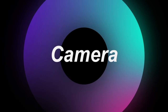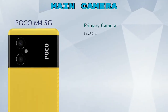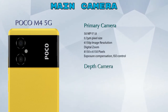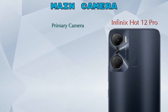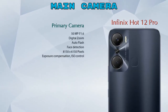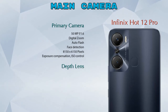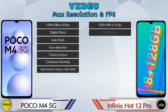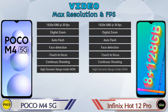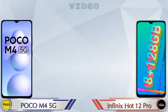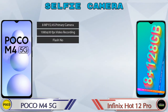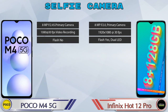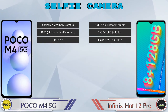Now let's talk about the camera. For the rear camera, the M4 5G has two cameras — a primary camera and a depth camera. The Hot 12 Pro also has two cameras — a primary camera and a depth lens. Both phones support seven different types of video camera features. For the front selfie camera, both phones have a single camera with three different features available.